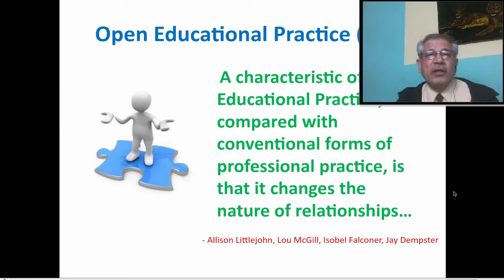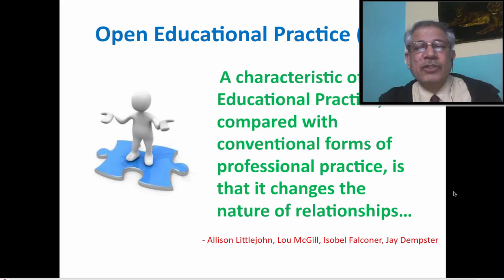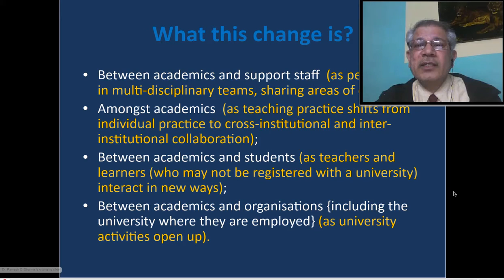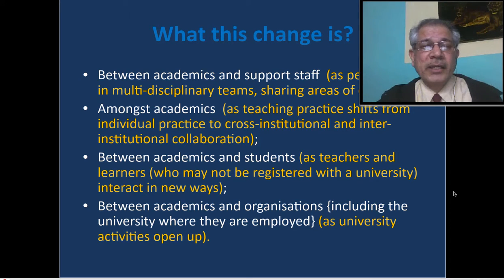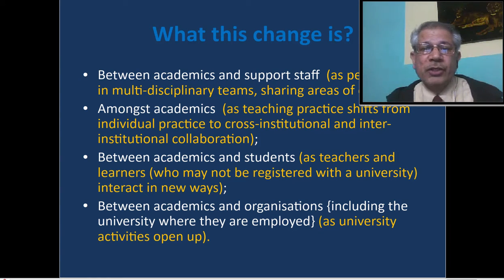Now let's have a look at various strategies. Littlejohn and McGill said that a characteristic of open educational practice compared with conventional forms is that it changes the nature of relationships. They group these into four main areas. The first is the change between academics and support staff — for example, sharing of expertise in multidisciplinary teams.